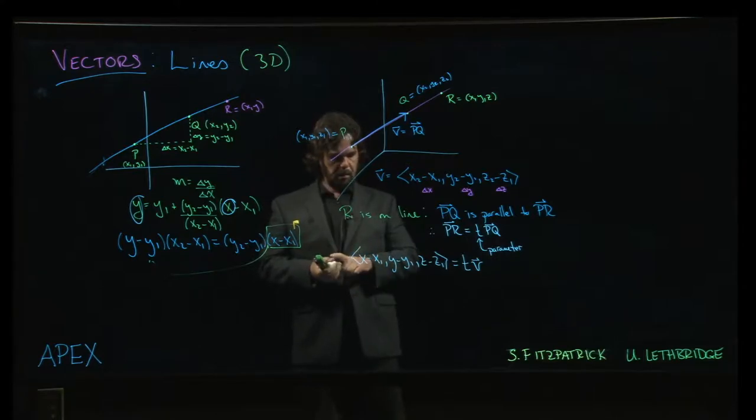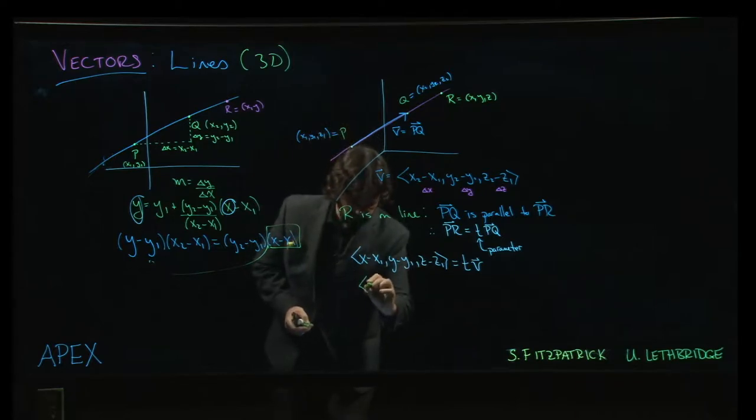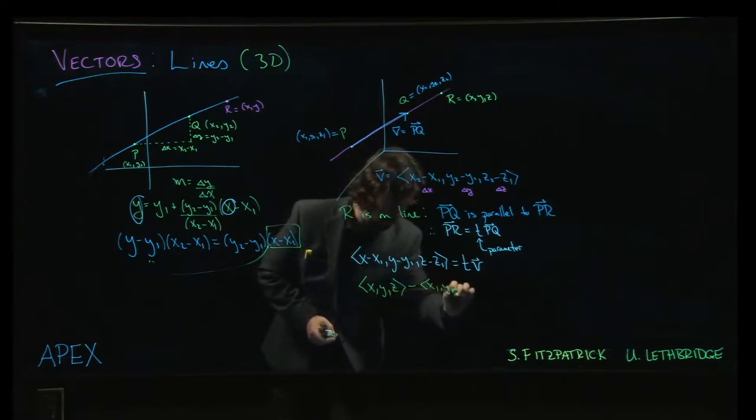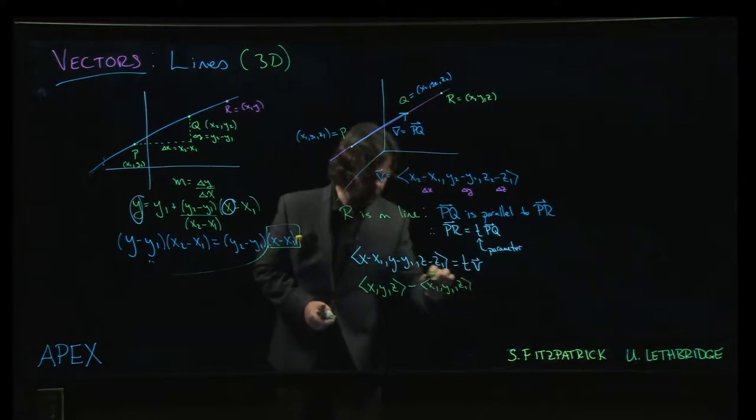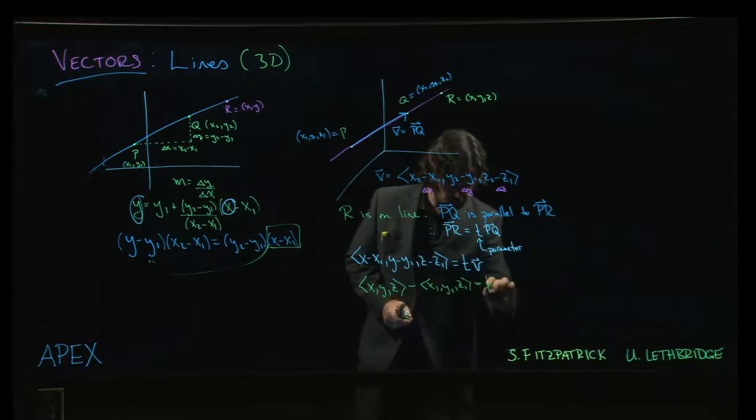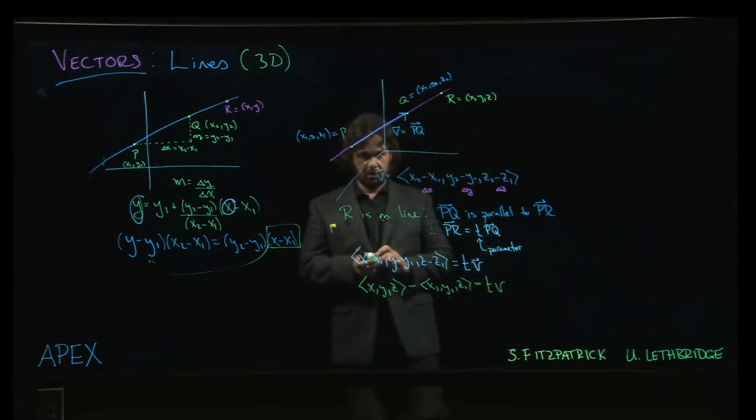And what I'm also going to do is I'm going to take this vector, I'm going to split this up. Using just sort of our rules for vector algebra. x, y, z minus x1, y1, z1 is equal to t times v. Now we're getting actually quite a bit closer to the vector equation for the line.